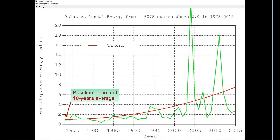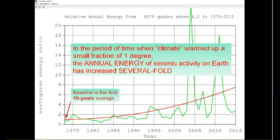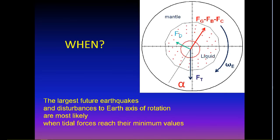Let's have a look at earthquake energy history over the last few decades. The red line represents the trend. Can you see how dominant are the two hiccups? These hiccups dominate the trend. In the period of time when climate warmed up a small fraction of one degree, the annual energy of seismic activity on Earth has increased several fold. The largest future earthquakes and disturbances to Earth's axis of rotation are most likely when tidal forces reach their minimum values.